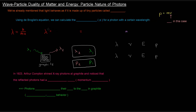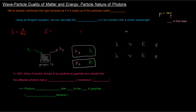In the last video, we discussed the wave nature of electrons, which are classically viewed as particles. And in this video, we're going to explore the particle nature of light, or photons. We've already mentioned that light, which is classically viewed as a wave, behaves as if it's made up of tiny particles called photons.